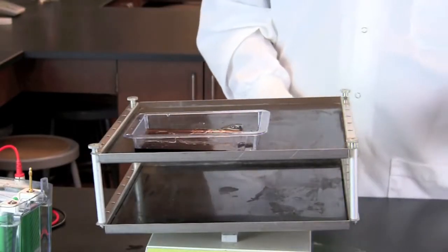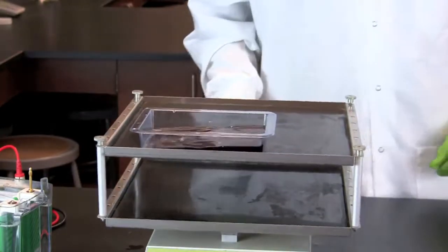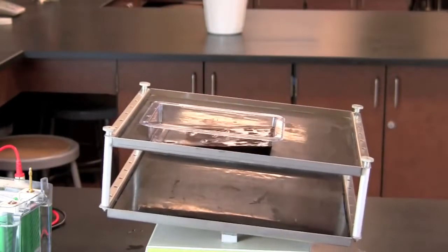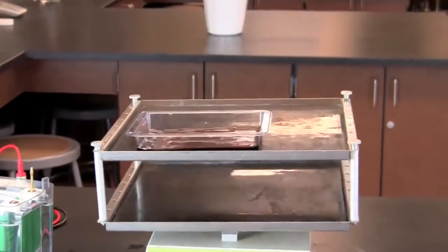After staining, rinse the gels two times in tap water. Destain the gels in a large volume of water overnight, changing the water at least once. Blue stained bands will be visible on a clear gel after destaining.